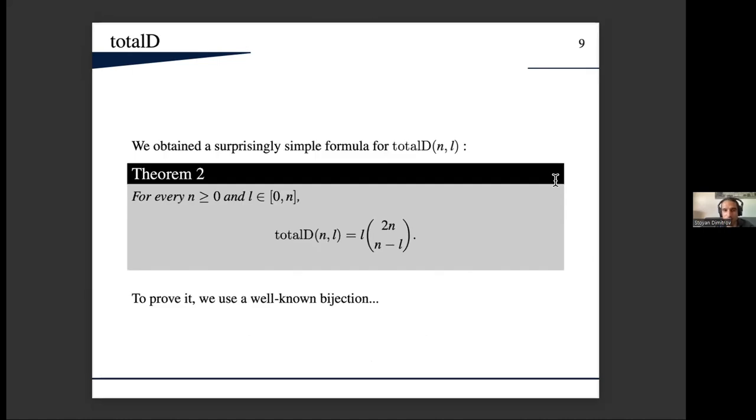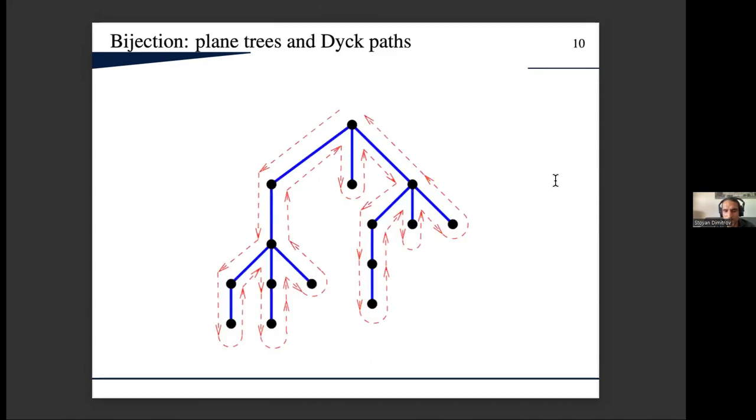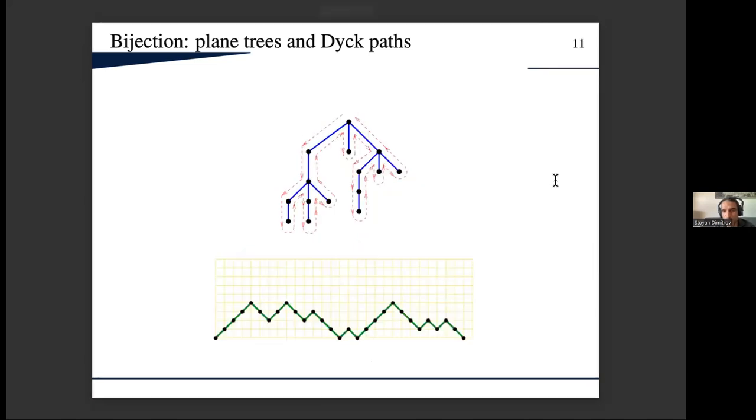Here is our first result. This is a surprisingly simple formula for total D. It's given by this expression—l times this binomial coefficient. To prove this, we use the well-known bijection between ordered trees and Dyck paths. When we perform DFS, basically when we go away from the root we put an up step, when we go closer to the root we put a down step.